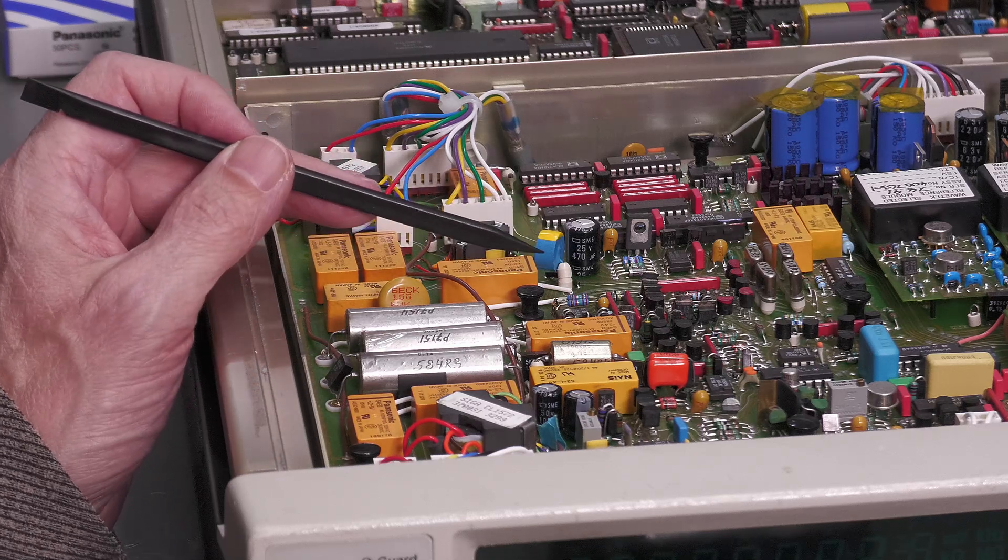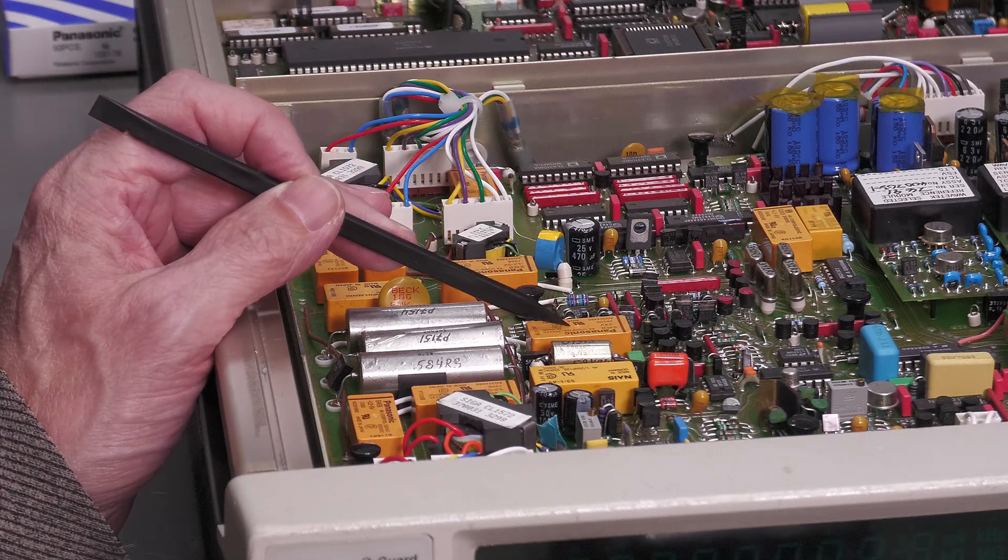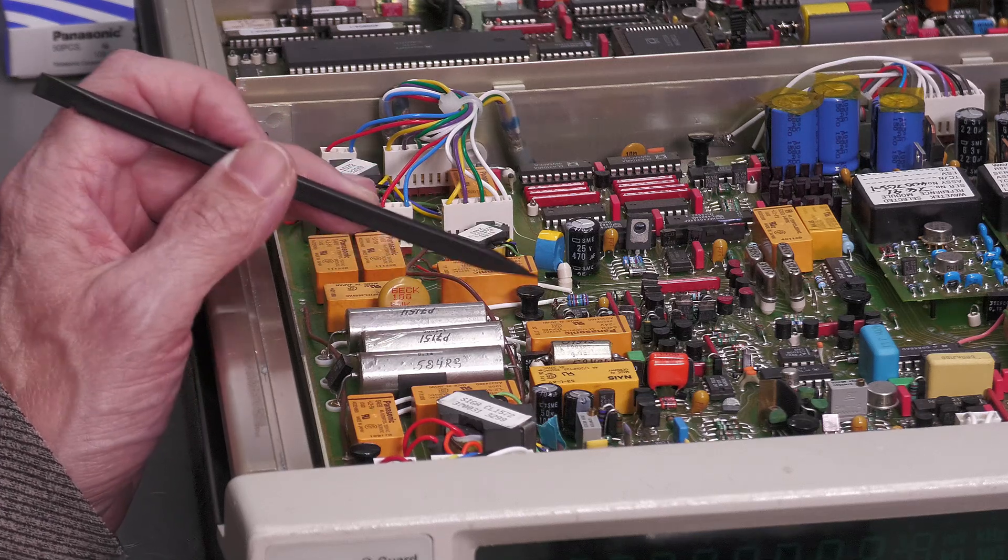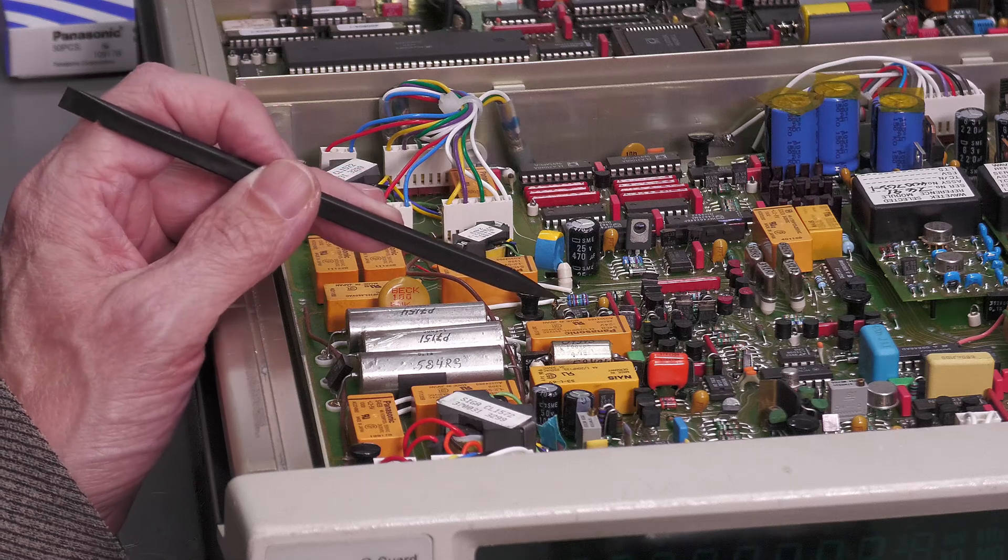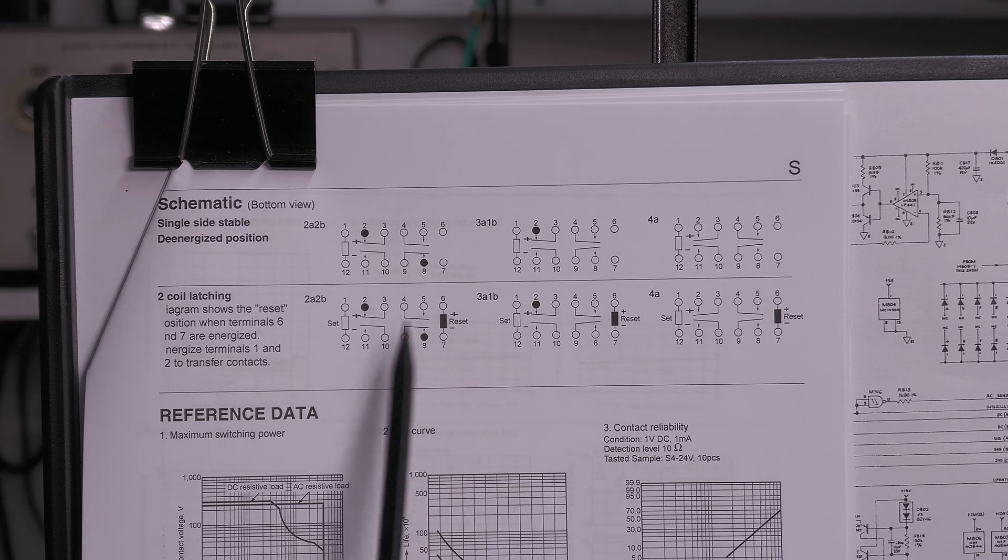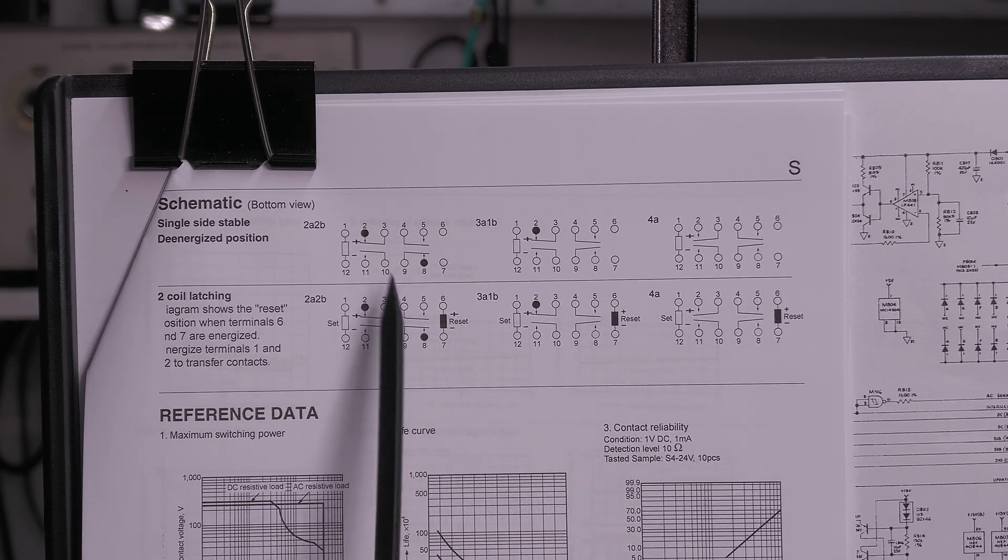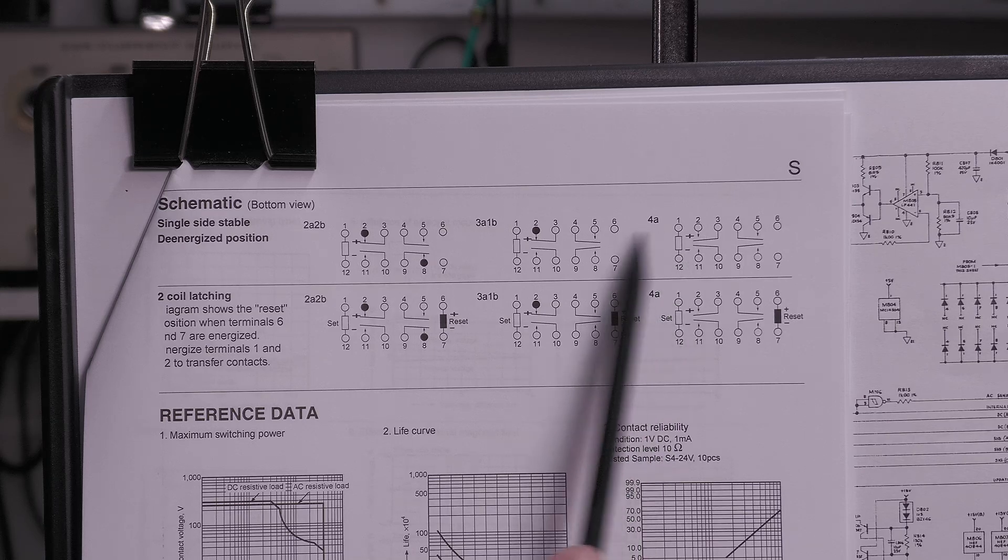So in this video I want to go through the relays and see, are those Panasonics, even though they're dual coil relays, actually suitable? Here's a schematic for the relays. You can see the dual coil relays there and then the single coil ones along the top.